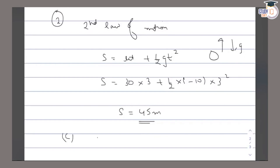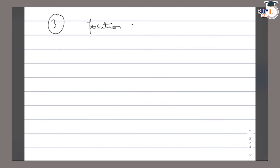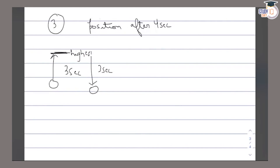Now, part C asks for the position after 4 seconds. Since the ball reaches the highest point at 3 seconds, at 4 seconds the ball has already passed the highest point and is coming back down. So we need to find how far it has fallen after the highest point — that is, in the 1 extra second after 3 seconds.